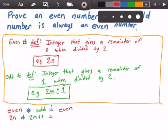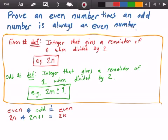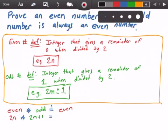We want to know if the result equals some even number, which would be something like 2 times k, where k is some arbitrary integer value. I'm going to erase the 2k for now, but that's the answer we want. So let's multiply out the left-hand side and hopefully we can get to 2 times k on the right-hand side. So 2n times 2m plus 1 equals...